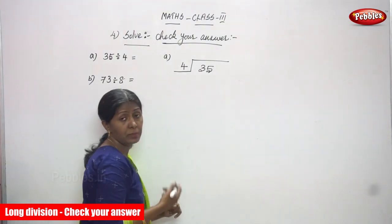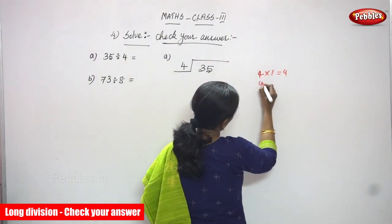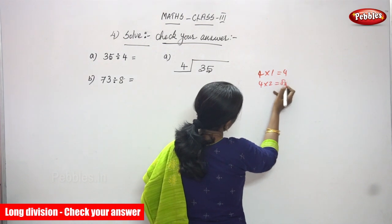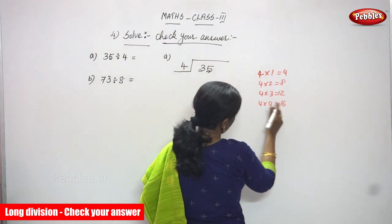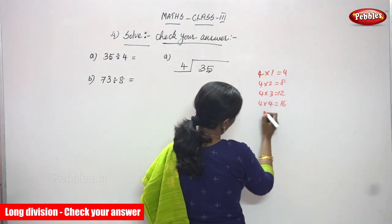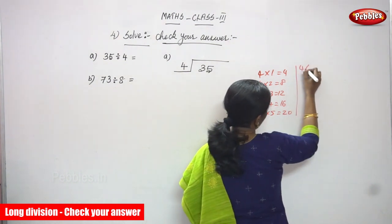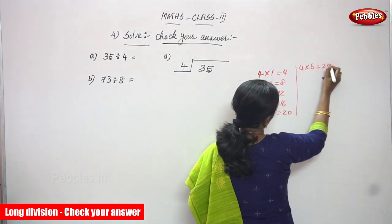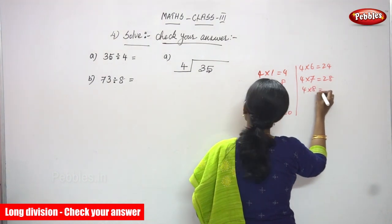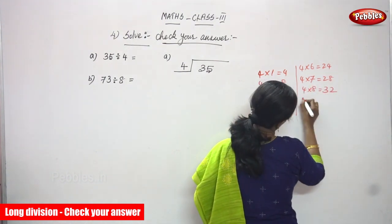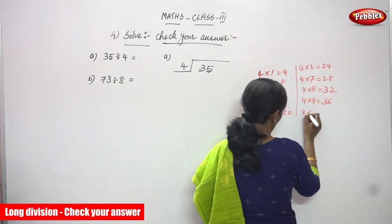Now you must say the four times table. 4 ones are 4, 4 twos are 8, 4 threes are 12, 4 fours are 16, 4 fives are 20, 4 sixes are 24, 4 sevens are 28, 4 eights are 32, 4 nines are 36, and 4 tens are 40.